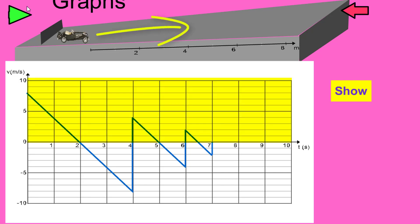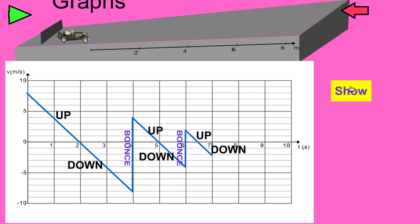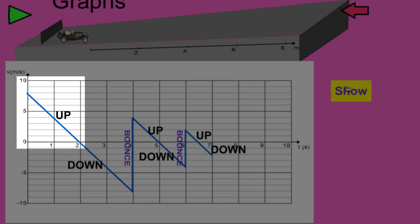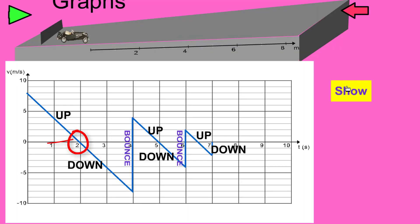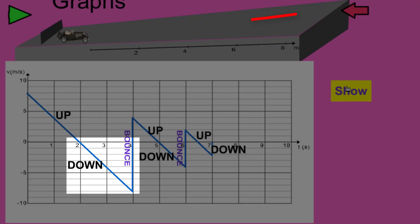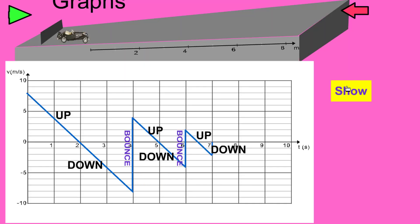Anything below that zero line means the car is traveling down the slope. Between zero and two seconds the car is traveling up the slope; once it gets to two seconds the car stops. Then between two and four seconds the car rolls back down the slope. At four seconds the car's velocity changes very abruptly — that's the bounce.